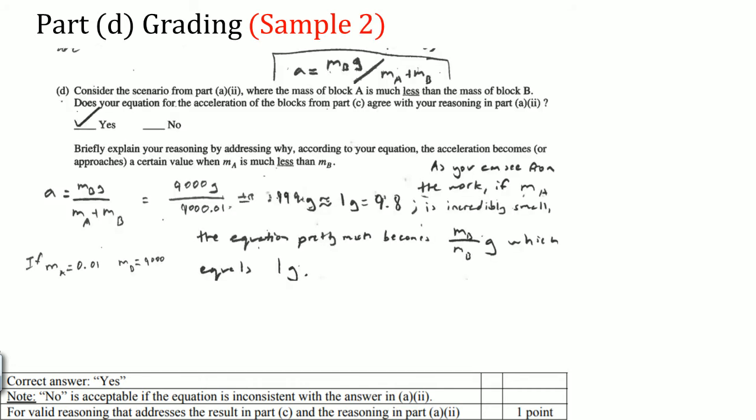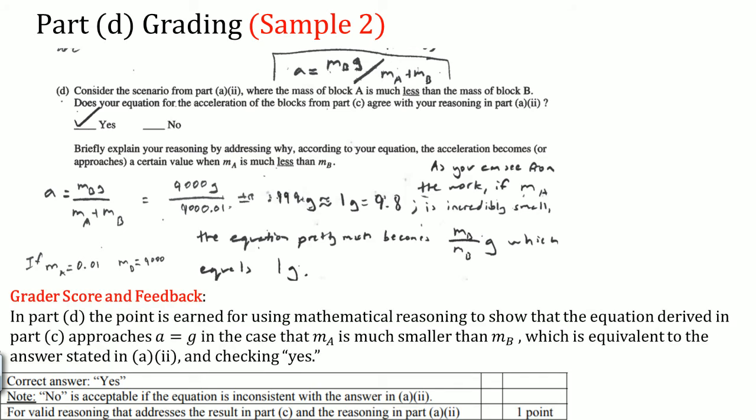Another student correctly said yes, and approached it by plugging in certain values. They showed that when MA is very small, the equation becomes approximately g, which equals 9.8 m/s². This earns the point because they showed mathematical reasoning and demonstrated that the equation is consistent with the earlier scenario. Plugging in values to verify consistency is a valid strategy.